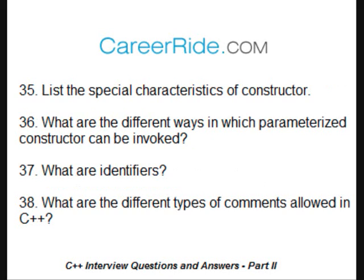List the special characteristics of a constructor. A constructor has the same name as that of a class. It is automatically invoked when an object of the class is declared. A constructor obeys the usual access rule. Private and protected constructors can only be accessed by the member function and friend function of the class. Public constructors are available for all functions.